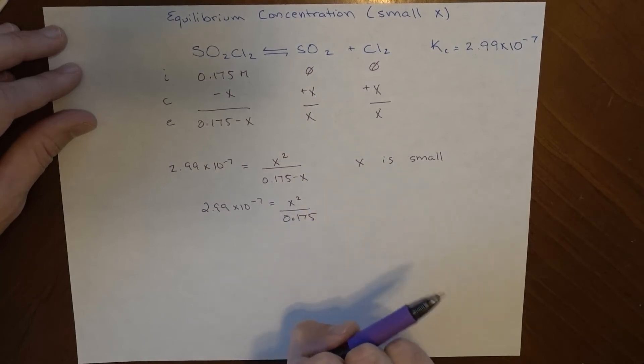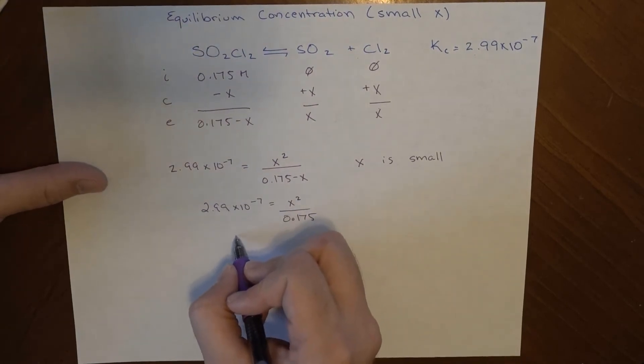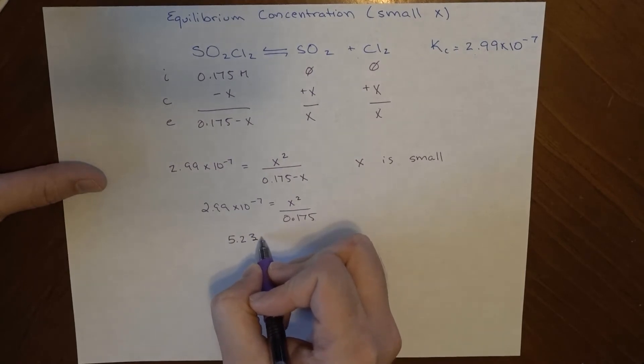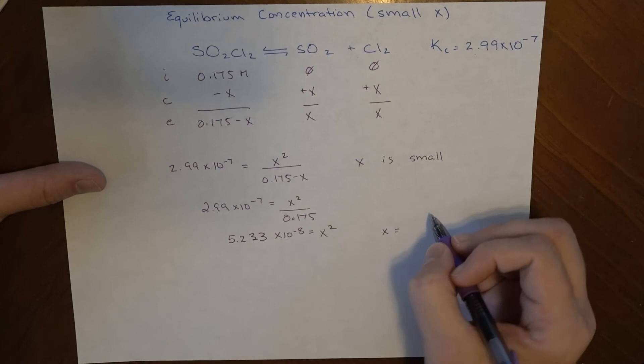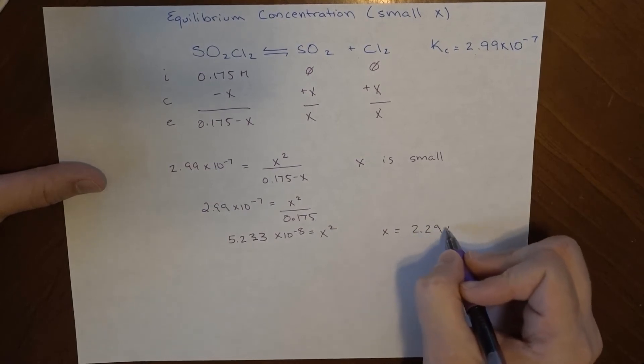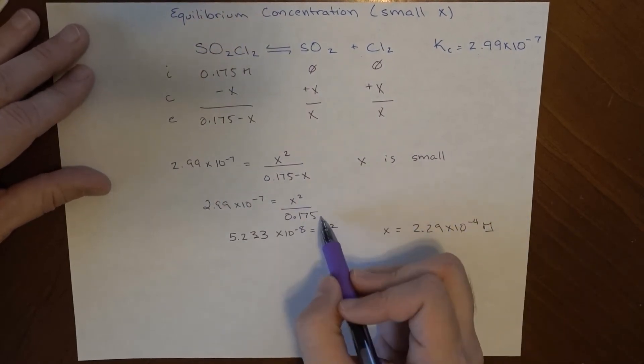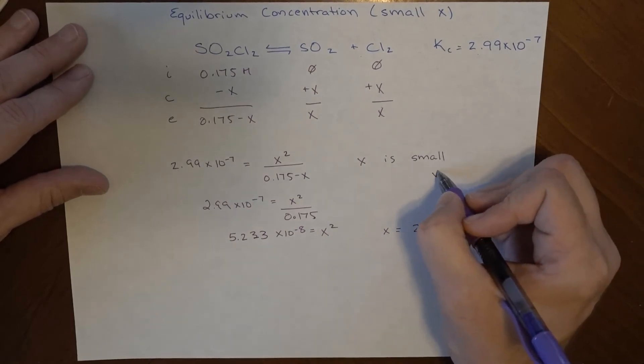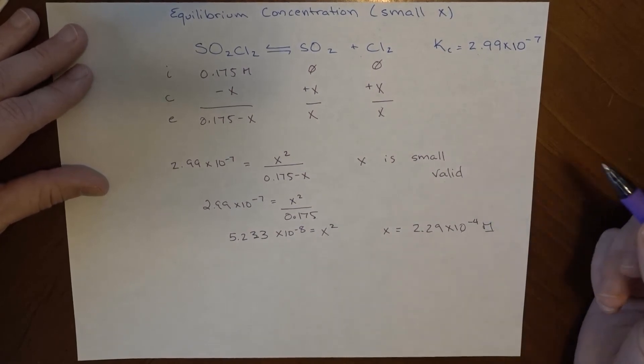But my expression is much easier to work with. So now when I work with it, I get 5.233 times 10 to the minus 8 is equal to x squared. So x is equal to 2.29 times 10 to the minus 4 molar. And this number is less than 5% of this number here, which means that my small x approximation appears to be a valid one. But we will check in the end to see if we're accurate.